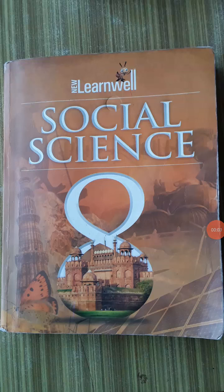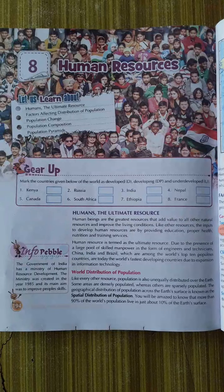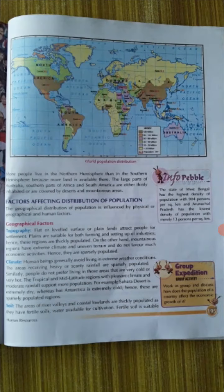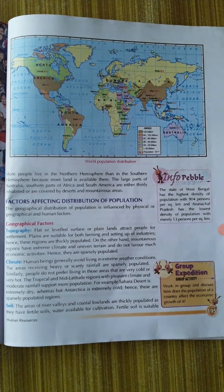Hello, good morning students, class 8th SST. Students, as you know very well, in SST we are describing chapter number 8 in geography — Human Resources. In our last videos we have discussed about humans the ultimate resources and world distribution of population. Today we will discuss about factors affecting distribution of population.